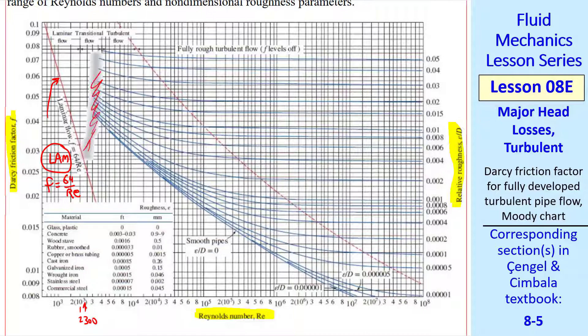Then we have this kind of fuzzy region, which is transitional, followed by turbulent flow. For turbulent flow, you see that F goes down as Reynolds number goes up. But at very high Reynolds numbers, these curves level off. We call that the fully rough turbulent flow region.